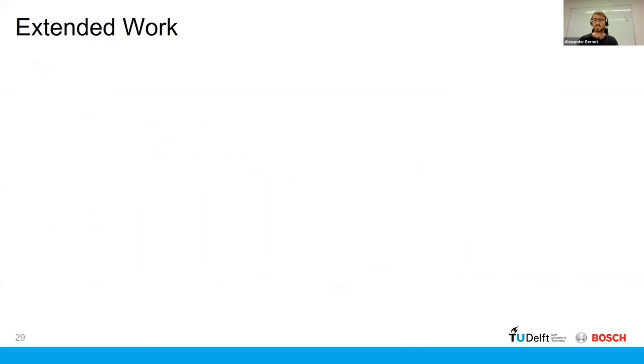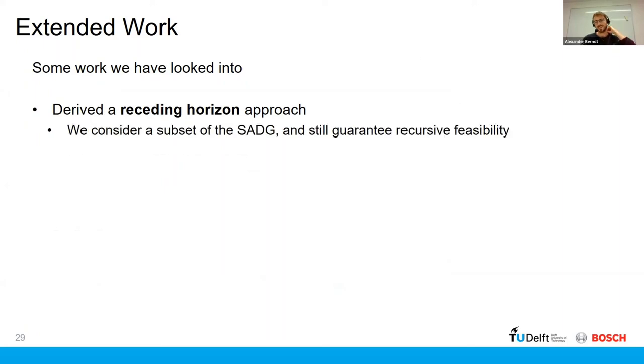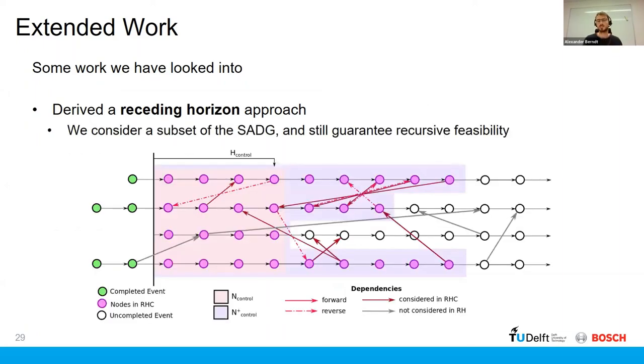Maybe I just want to discuss some extended work which we've looked at since then, is that we've also looked into deriving a receding horizon approach. So this is a bit of an extension of what we did in just considering the dependencies within a fixed horizon, but we also want to limit the amount of constraints that we are looking at in general for the mixed integer linear program. And so we found a way to actually look at only a subset of the action dependency graph and still guarantee deadlock-free behavior in the future.